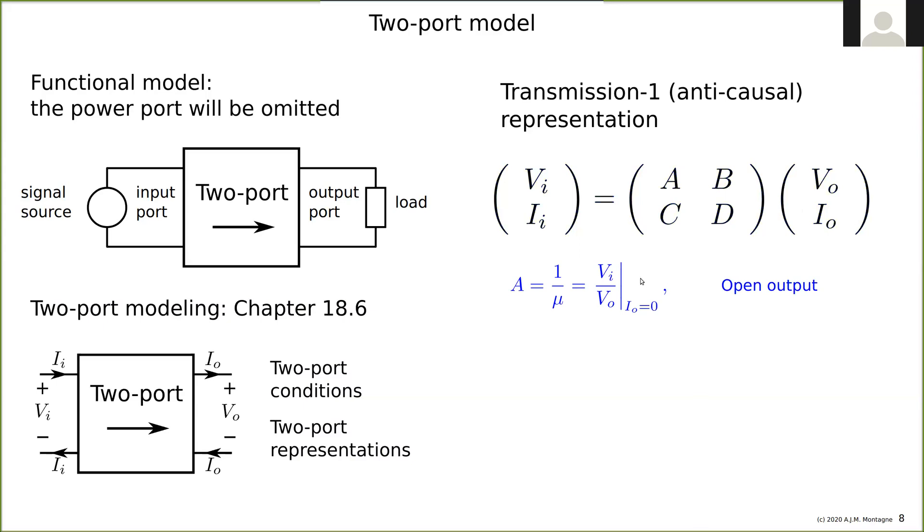A says Vi is A times Vo plus B times Io. If I make Io zero, then I simply have Vi is A times Vo. So I put some voltage in the input, measure the output voltage, take no current from the output, and I know A. This is measuring one over the voltage gain, which is A, with no current at the output. This means you leave the output port open.